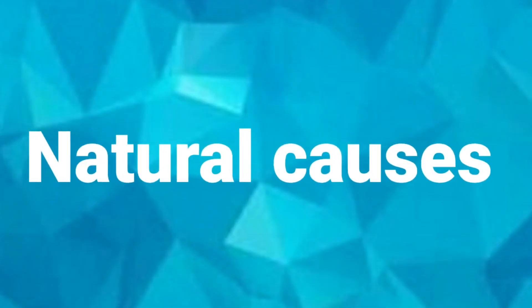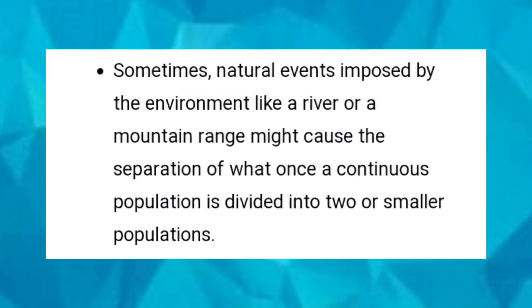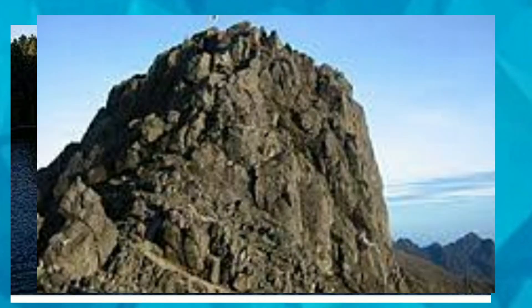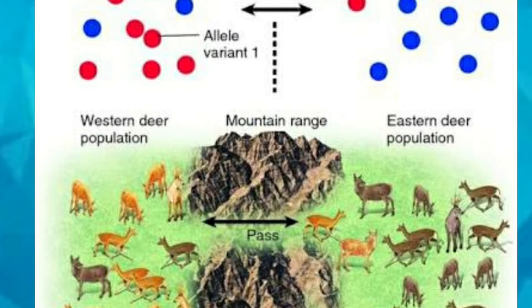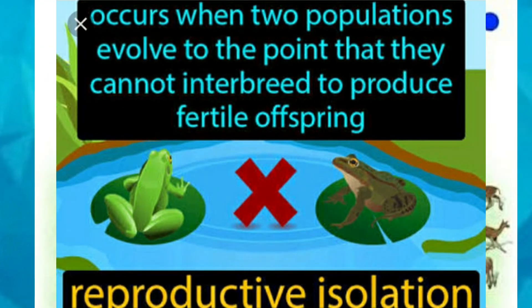The next factor is natural causes. Sometimes natural events imposed by the environment — like a river or a mountain range — might cause the separation of what was once a continuous population into two or smaller populations. These events result in geographical isolation of the incipient species, followed by reproductive isolation, leading to speciation.